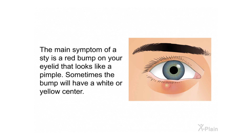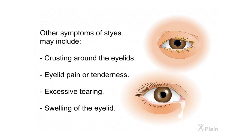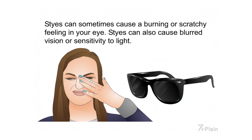The main symptom of a stye is a red bump on your eyelid that looks like a pimple. Sometimes the bump will have a white or yellow center. Other symptoms of styes may include crusting around the eyelids, eyelid pain or tenderness, excessive tearing, and swelling of the eyelid. Styes can sometimes cause a burning or scratchy feeling in your eye, as well as blurred vision or sensitivity to light.